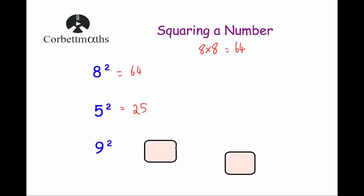Our next question is 9 squared. Again, that means multiplying 9 by itself. 9 times 9 is 81, so the answer is 81.